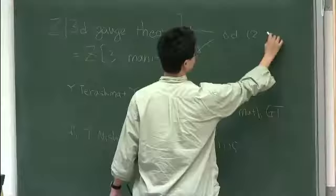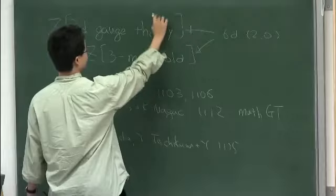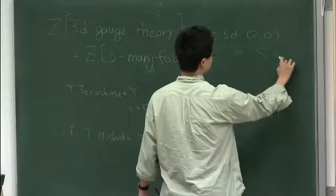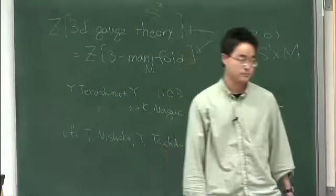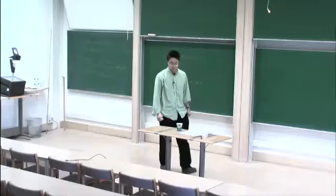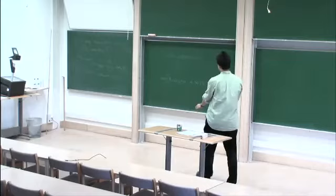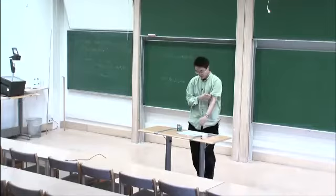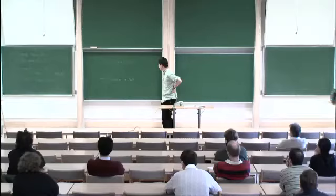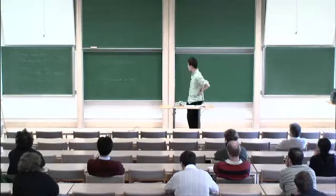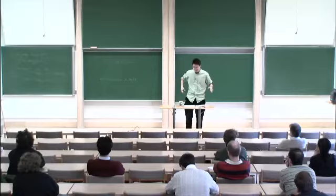These topics are very closely related. My story is about a relation between two three-dimensional theories, which come from the dimensional reduction of the (2,0) theory. This itself is defined on a certain three-manifold, and that is defined on a certain three-sphere. The moral of the story is that we're going to compactify the 6D theory on S3 times M3, where M is a certain three-manifold. That explains why such an equality holds.